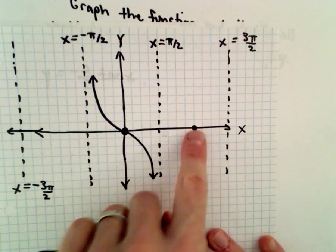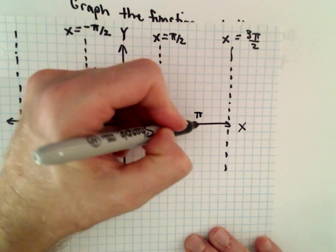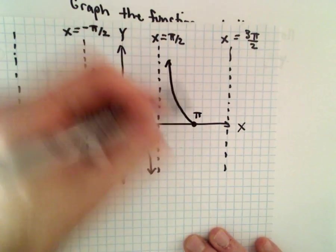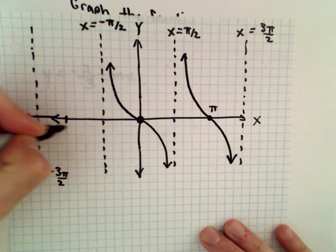If you move over pi units, so here's x equals pi, again this graph is just going to repeat itself, and likewise at negative pi.